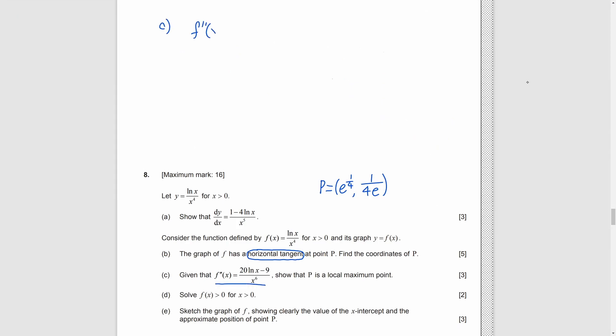After we find the coordinates of p, we go to part C. And the double derivative is given. We need to show that p is local maximum. Needless to say, we put p into the second derivative. After calculation, we get negative 4 over e to the power something. As the denominator is positive and the numerator is negative, the second derivative at p is negative. That means, it is concave down around p. So, p is a local maximum.